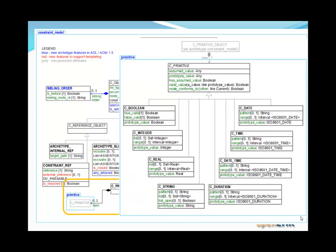You can see it marked there down the bottom left-hand side. So a C_primitive object is an AOM type that is capable of constraining primitive objects, including typical basic programming types.